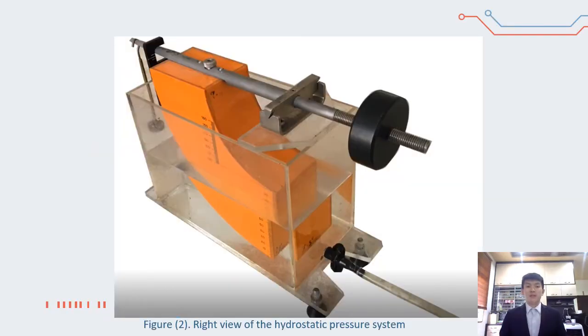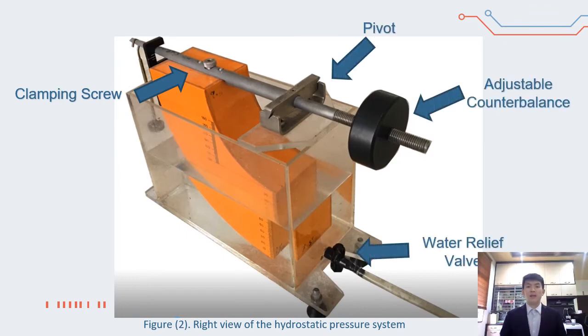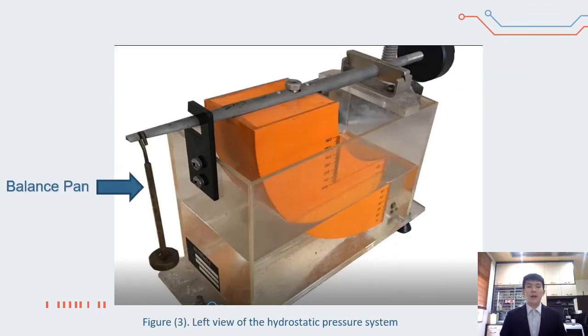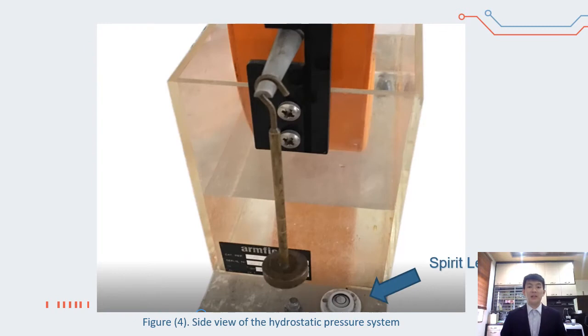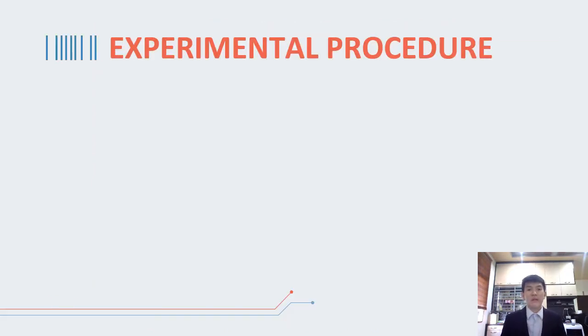Setup of the experiment: first we have campaign screw, pivot, adjustable counterbalance, water, balance pan, level indicator, balance arm, coordinate screw, and finally the spirit level.